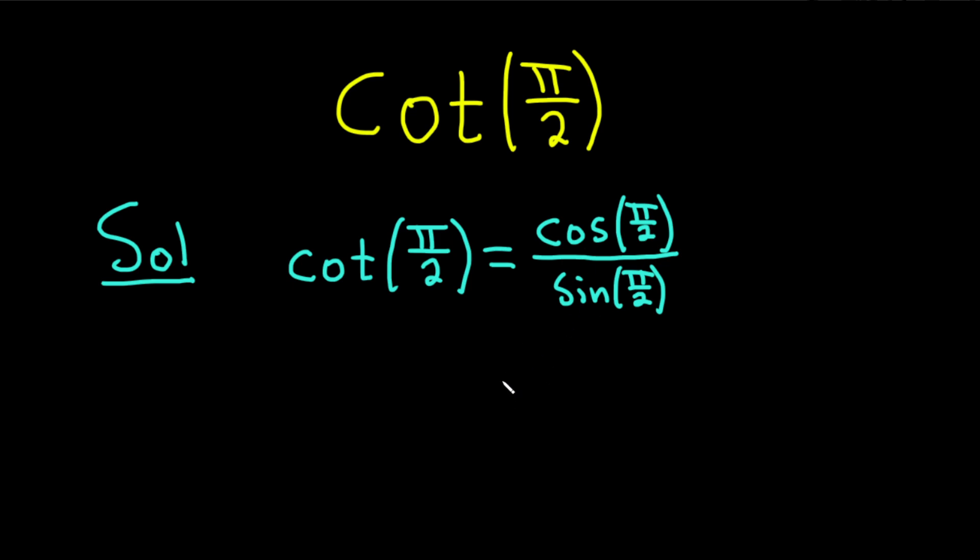The cosine of pi over 2 is 0. The sine of pi over 2 is 1. So we get 0 over 1, and so we get 0. So the cotangent of pi over 2 is equal to 0.